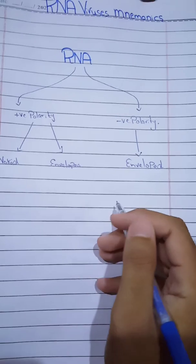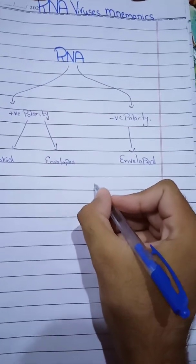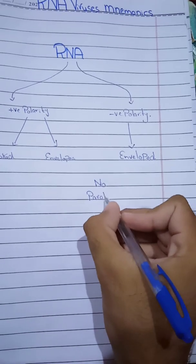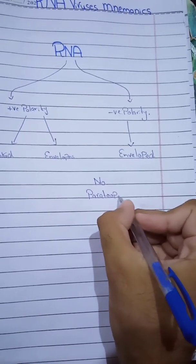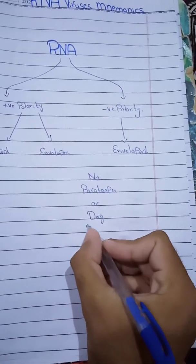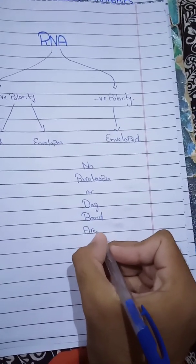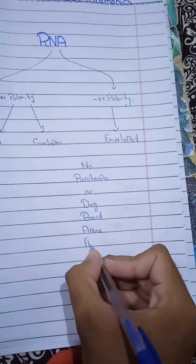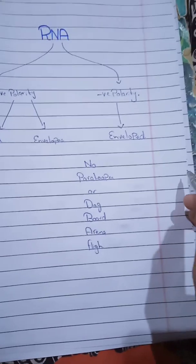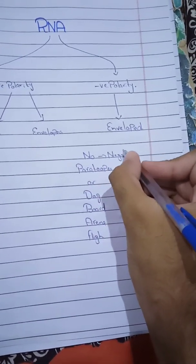First, let's decode the enveloped viruses. I give you a mnemonic: 'No Para Tupper Or Dog Board Ariana Flight.' The N stands for negative polarity — these are all negative polarity viruses.